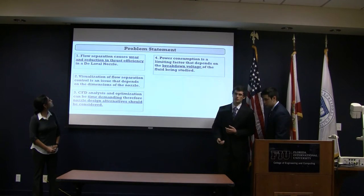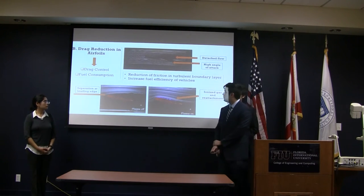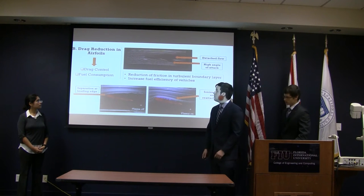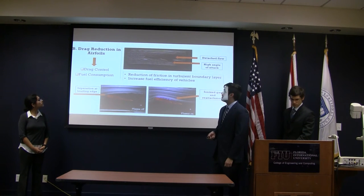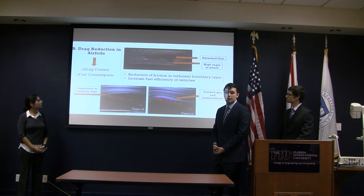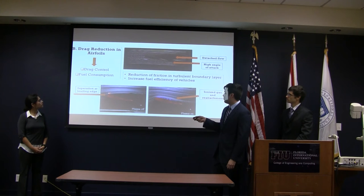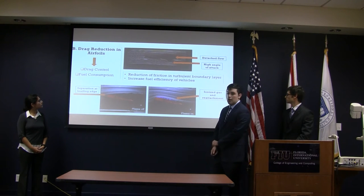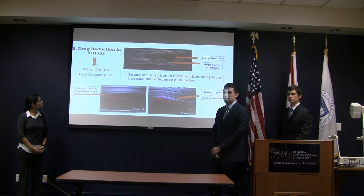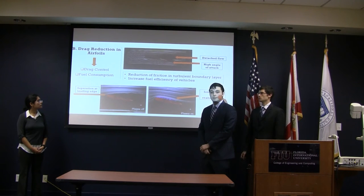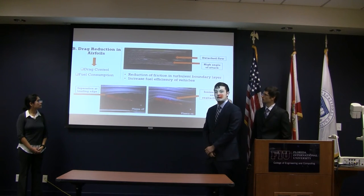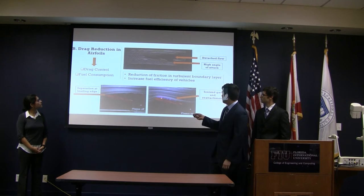Now Daniel is going to talk about the case for an airfoil. In the case of an airfoil, flow separation causes higher form drag as well as higher friction within the turbulent boundary layer. When the flow is not controlled, it separates and goes way over the airfoil. Therefore, if flow separation is reduced, drag is also reduced, and the fuel efficiency of the aircraft can be increased. Here you can see the flow reattached using a plasma actuator.